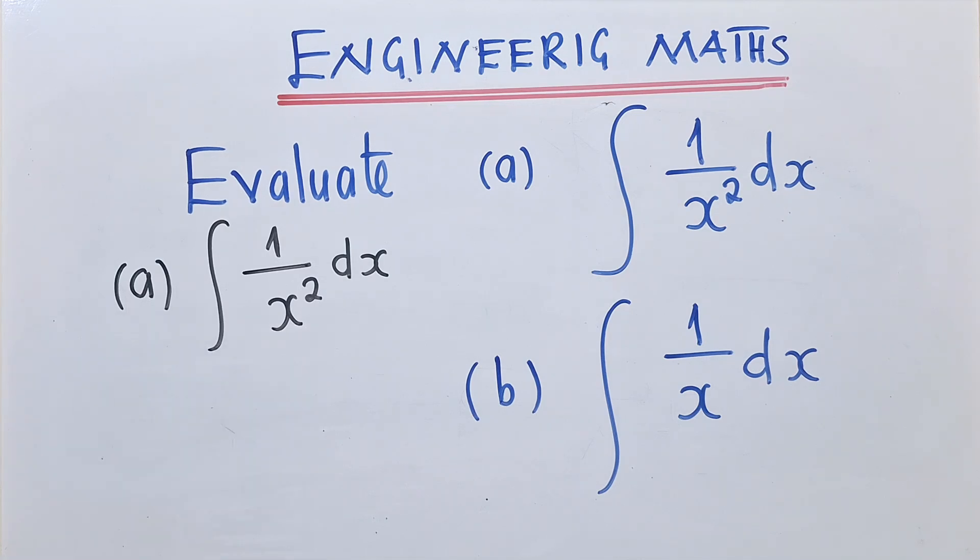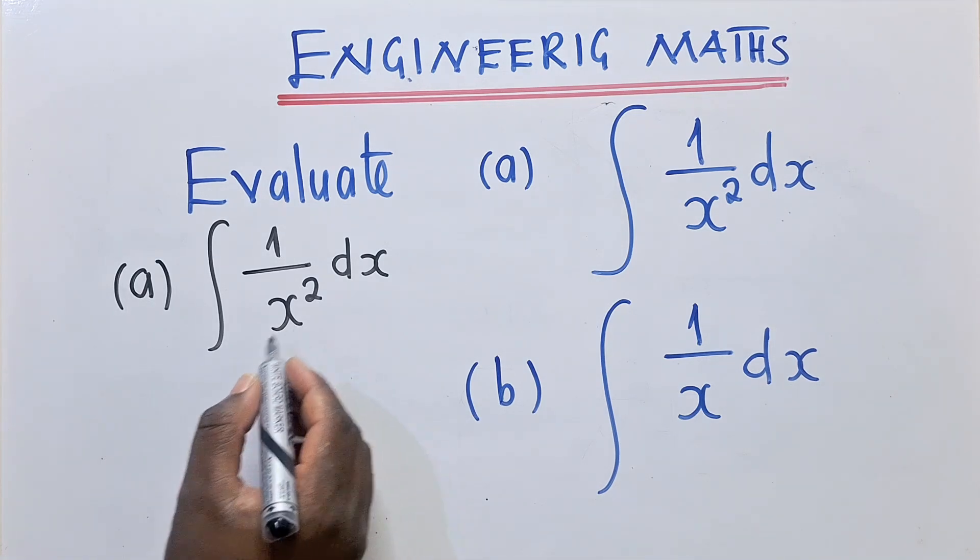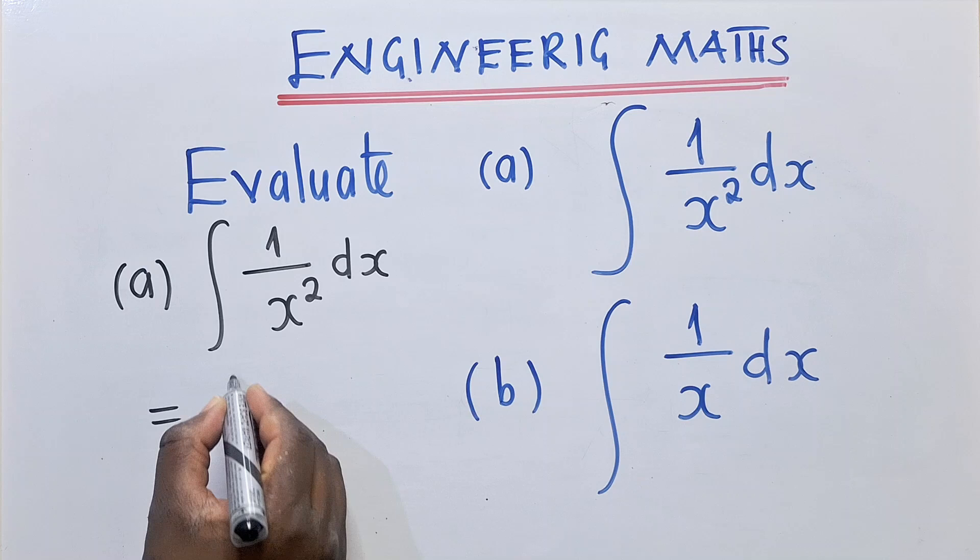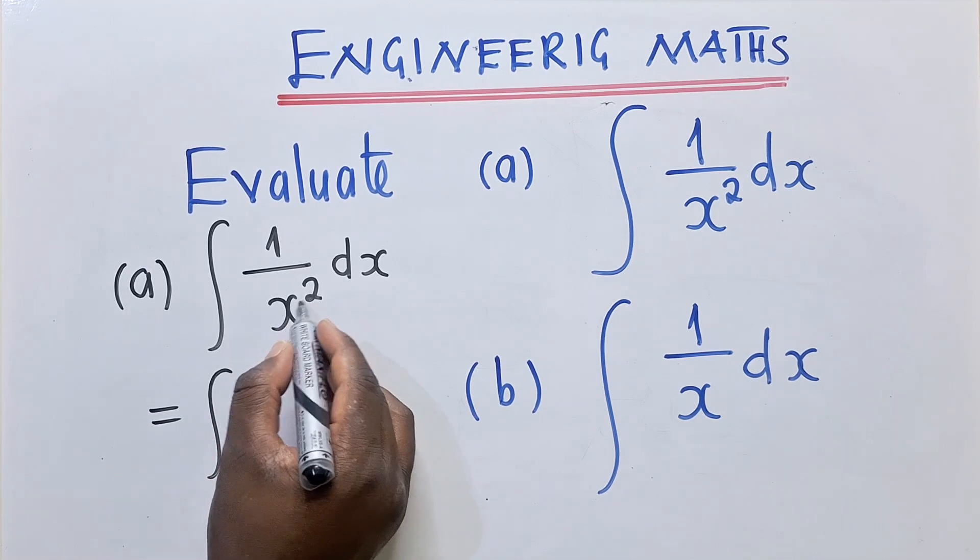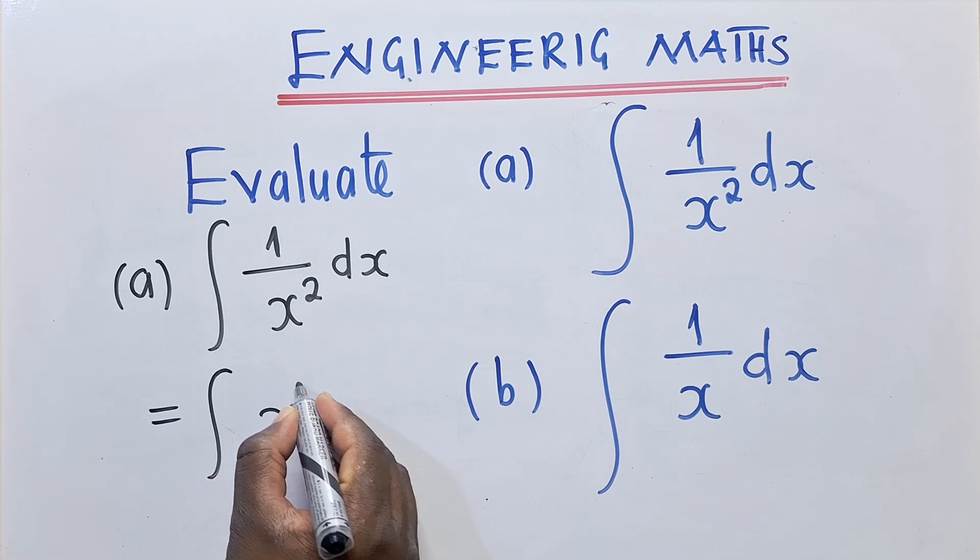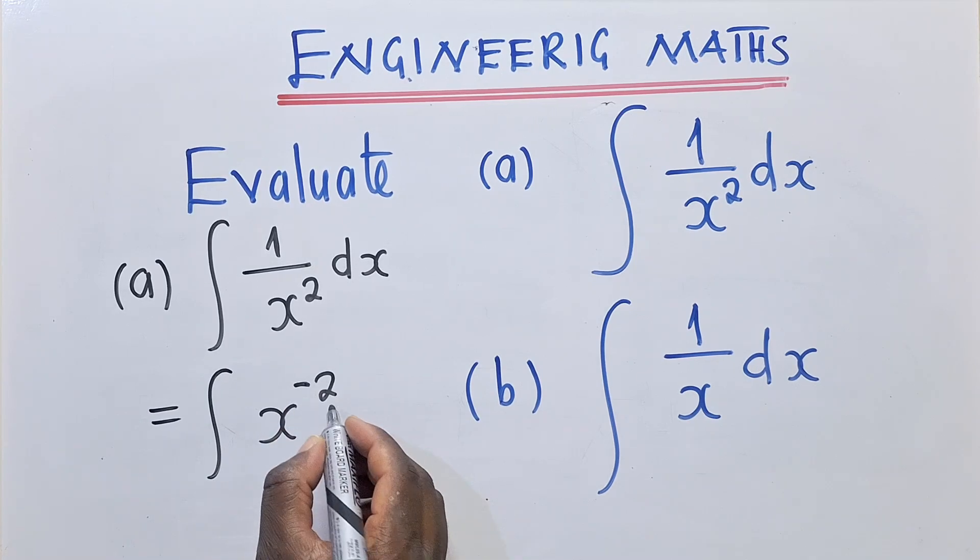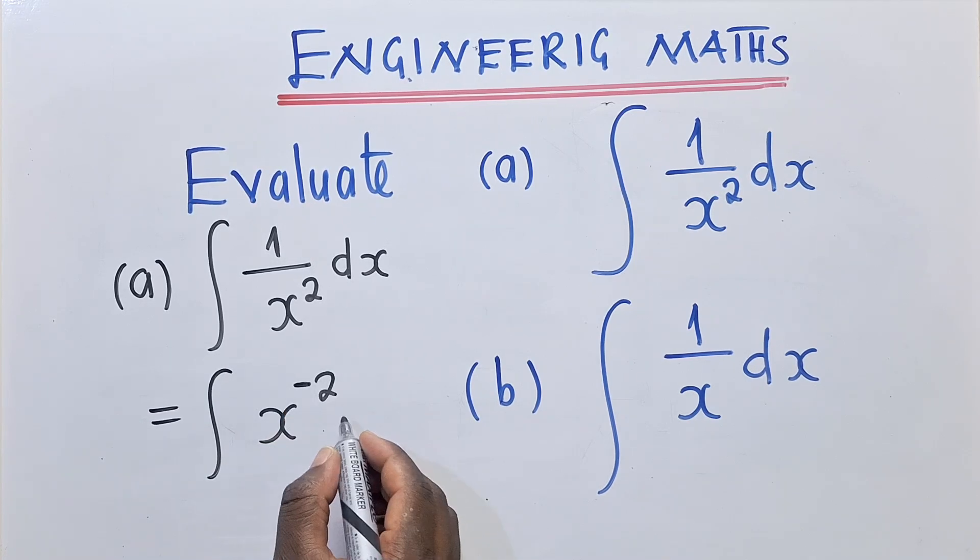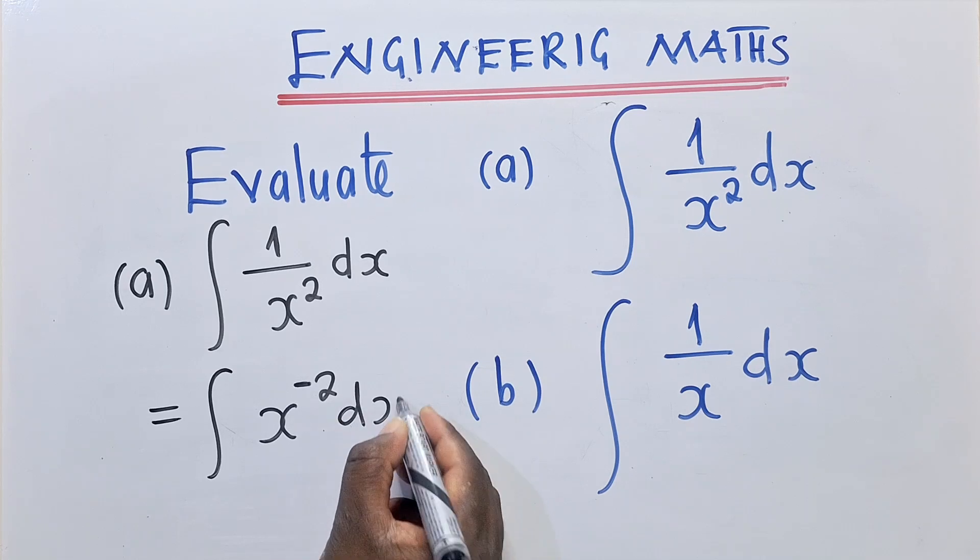Very important. We know, of course, that for the laws of indices, when we change the position of the denominator here, so it will go on top, this will be x power negative 2 with respect to x.